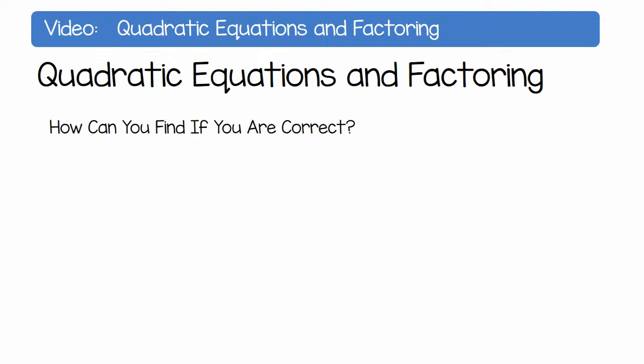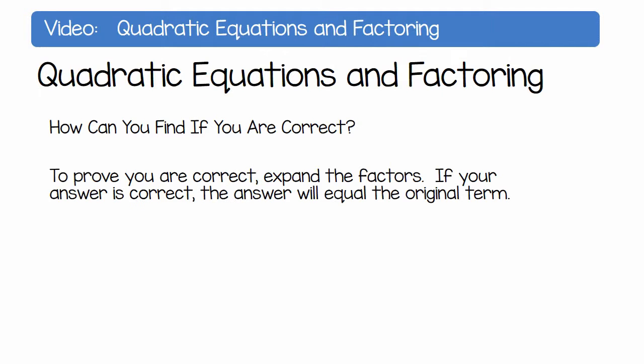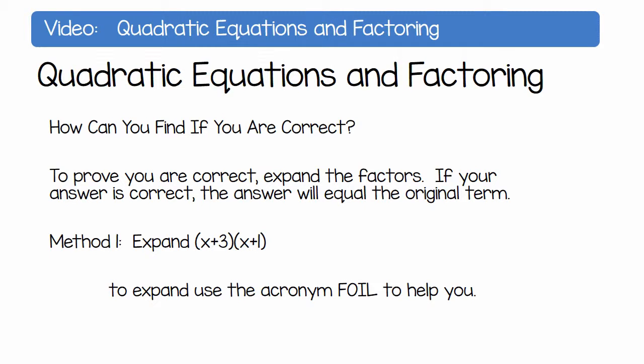How can you find out if you are correct? To prove you are correct, expand the factors. If your answer is correct, the answer will equal the original term. Method 1, expand x plus 3 and x plus 1. To expand, use the acronym FOIL to help you.